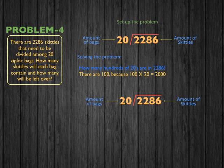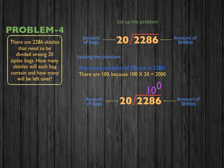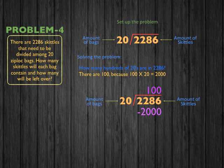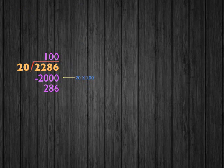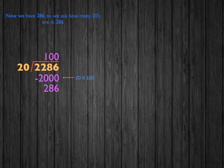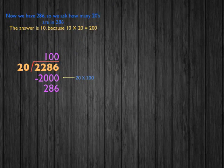We write 100 on the top, then take 2,000 and subtract it from 2,286 Skittles, giving us 286. We then ask how many 20s are in 286. The answer is 10, because 10 times 20 equals 200.